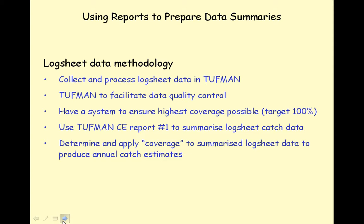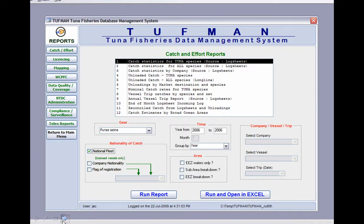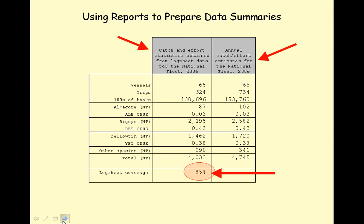Collect and enter the log sheet data into Toughman. Use the Toughman Trip Coverage Module to estimate trip coverage. Then run the post data entry processes to facilitate data quality control and to improve the estimated trip coverage. Here we have used Toughman Catch and Effort Report Number 1 to extract the total catch and effort for the National Long Line Fleet for 2006 according to log sheets. We have determined that the coverage of the log sheet data is 85%, so this value has been applied to the log sheet catch and effort data to come up with estimates of annual catch and effort.